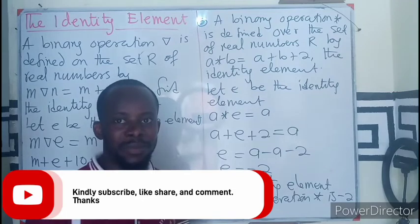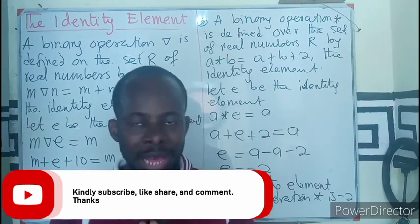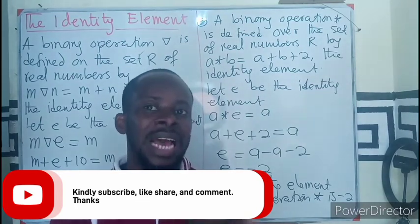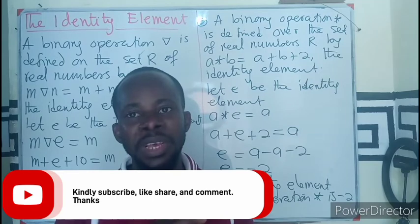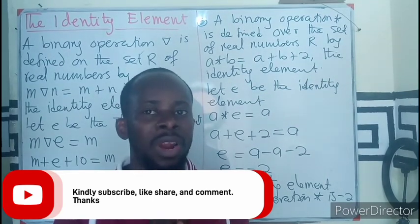Therefore, we can say that the identity element under the operator star is just minus 2. I believe we have learned a thing or two. Thank you so much for watching. The next episode, we will take the inverse of an element. So watch this space for that. Don't forget to like and share with your learning mates.